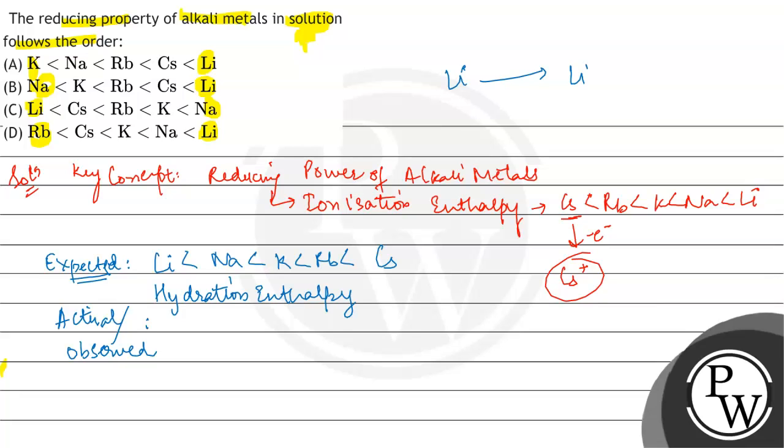This hydration enthalpy of the reaction is so high that it can compensate for very high ionization enthalpy also, making lithium ion most readily available. So lithium readily converts to lithium ion and loses one electron.